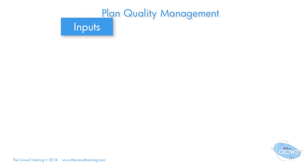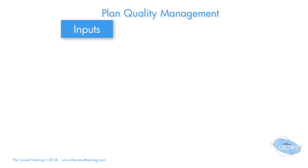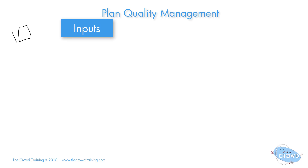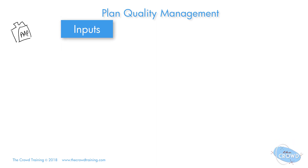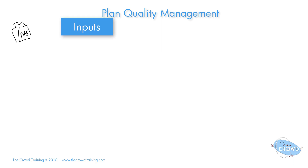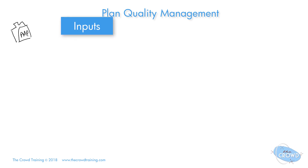Starting with the inputs, we need to have the project management plan. The project management plan includes all the other pieces of the plan, so quality planning is part of it. You're naturally going to have to think about how this plan of quality management fits in with the other plans that are out there.